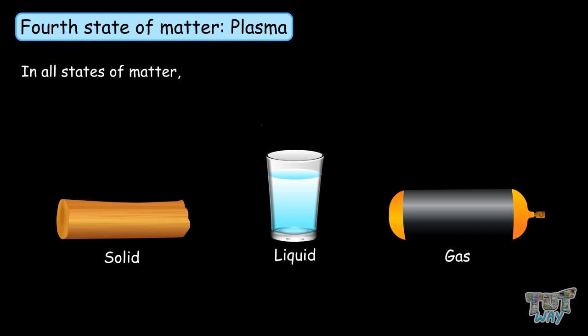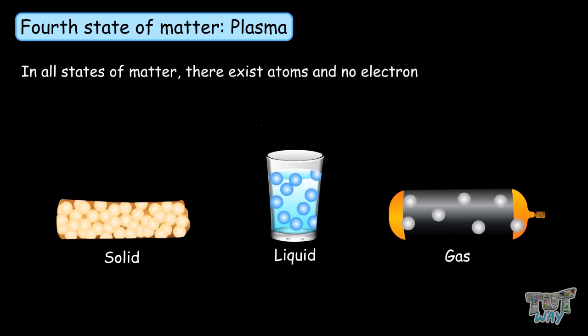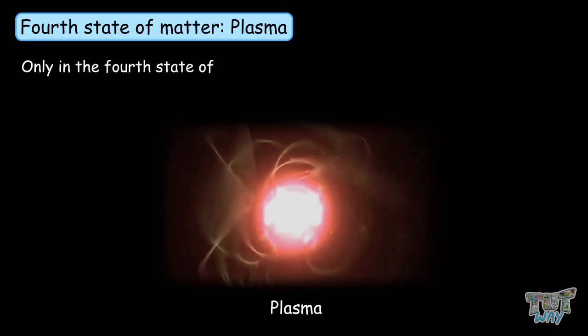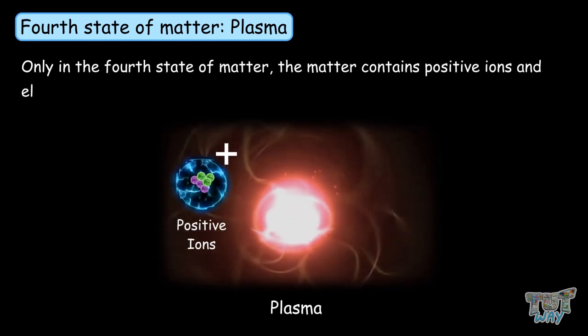In all states of matter, there exist atoms, and no electrons and positive ions exist. Only in the fourth state of matter, the matter contains positive ions and electrons.